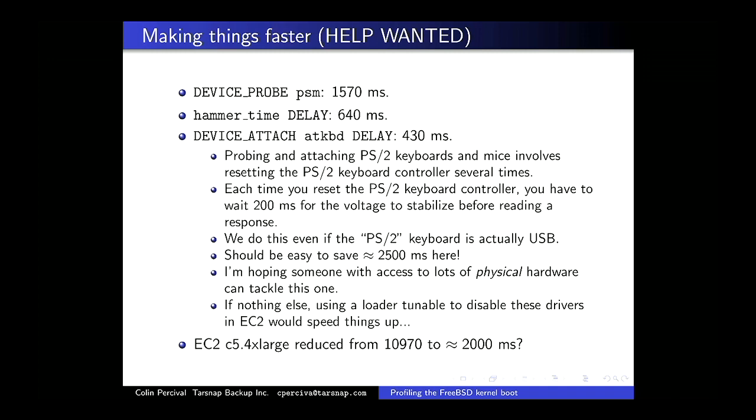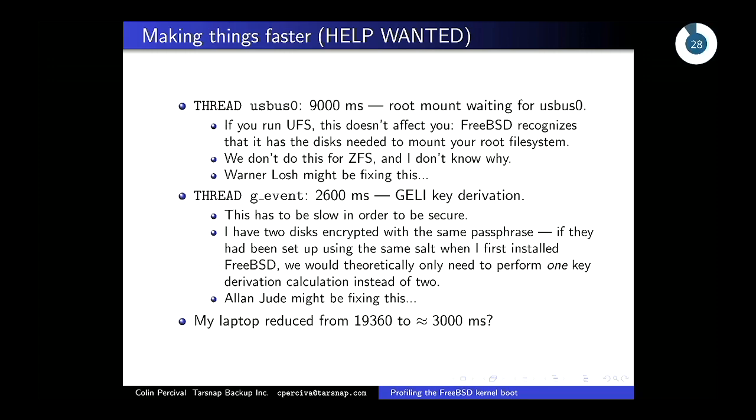If nobody can fix the PS/2 timing safely, at least I can speed it up on EC2 by setting hints in the EC2 loader configuration saying 'you don't have a keyboard, you don't have a mouse, don't look for them.' Other things I'm looking for help with: fixing the waiting for USB when booting from ZFS — Warner might be working on this — and GELI key derivation. I have two encrypted disks using the same passphrase but different keys, which adds no security. If we set them up to use the same key they'd only need to derive one key, making it twice as fast. With all these fixes together, that will cut my laptop boot time from 19 seconds down to 3 seconds.